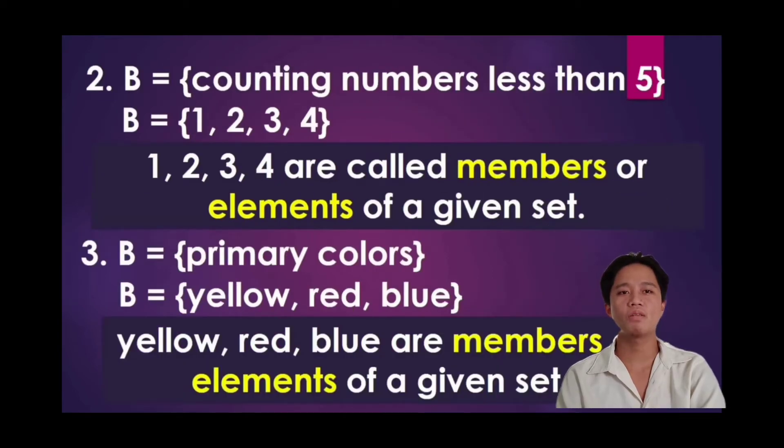Example number 2, set B, counting numbers less than 5. We have 1, 2, 3, and 4. These are called members or elements of a given set.